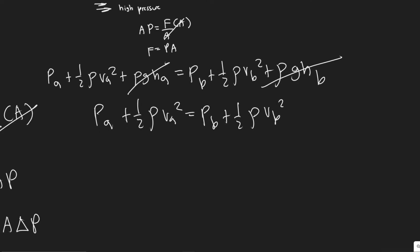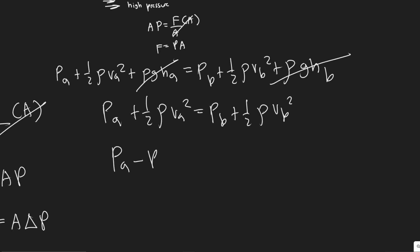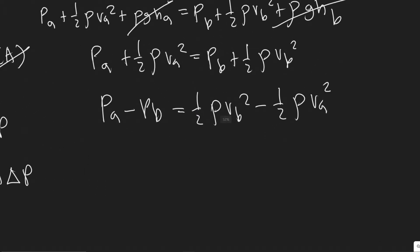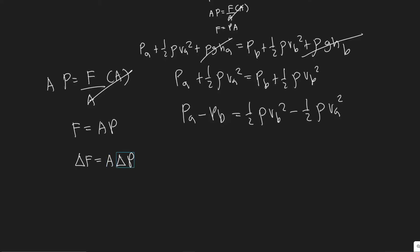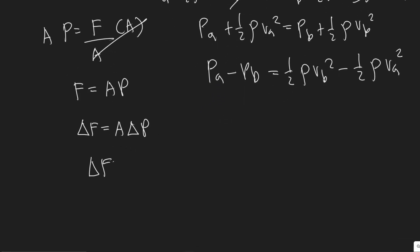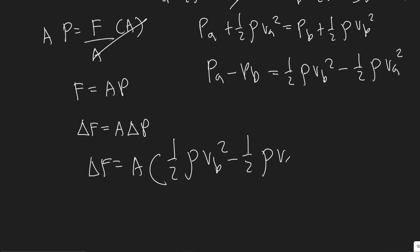What we want is the change in pressure. Moving PB to the other side and rearranging gives: PA minus PB equals one-half rho VB squared minus one-half rho VA squared. To find the change in force, we use: delta F equals A times delta P, which is A times that pressure difference. So the lift force equals the area times that quantity.